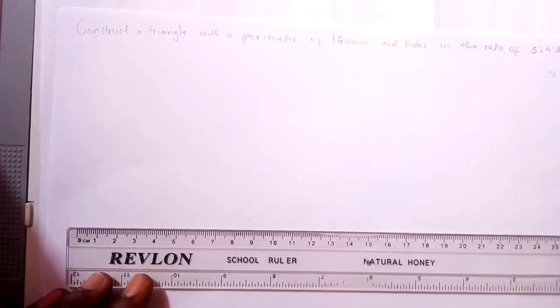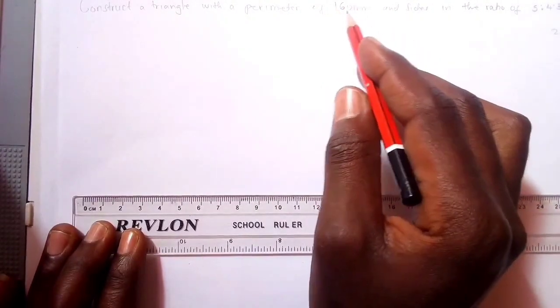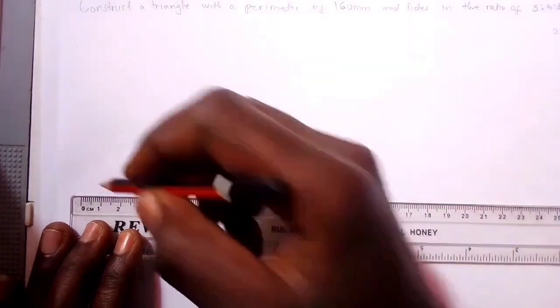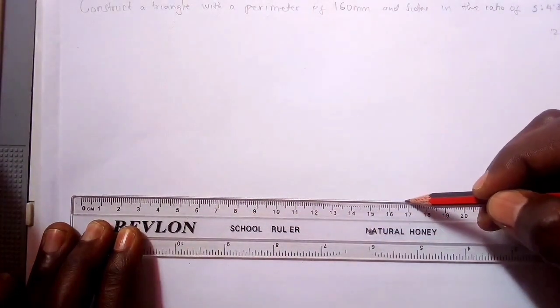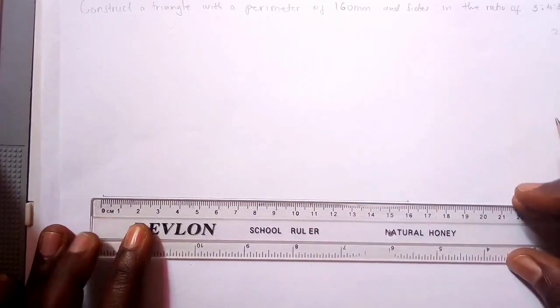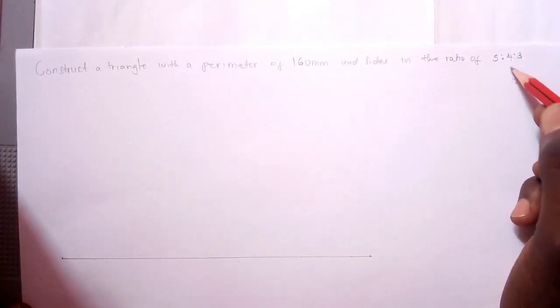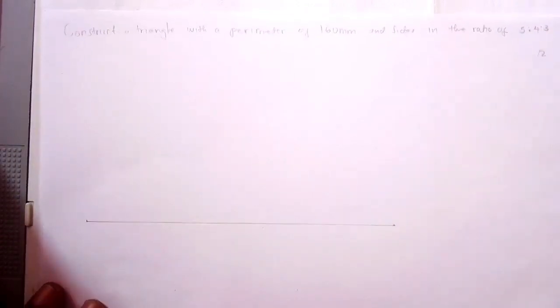To solve this, firstly draw a line of 160mm as the given length. Then sum up your given ratios: 5 plus 4 plus 3 is equal to 12. Then divide this line into 12 equal parts, which corresponds to this sum of the ratios.